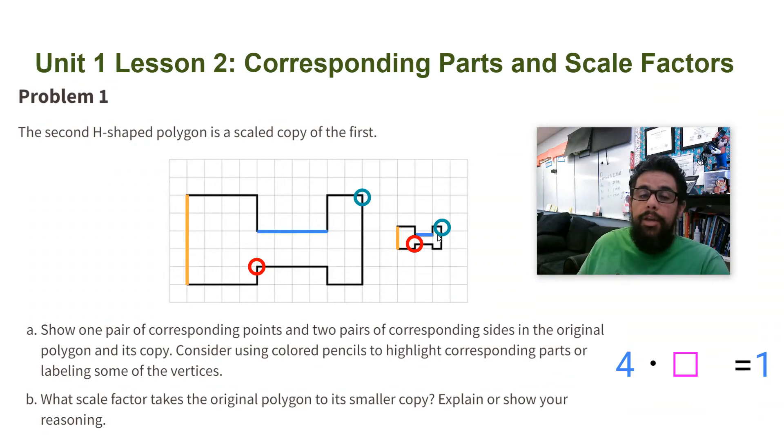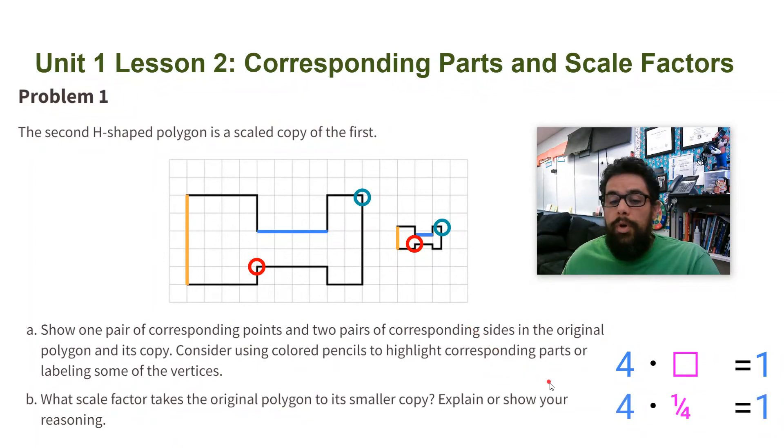So what number can I multiply four with to get the number one? Well, it's going to be one fourth. So this is telling me that the scale factor is a quarter. If I take this and multiply it by a quarter or take a quarter of this, I'm going to get this figure here.